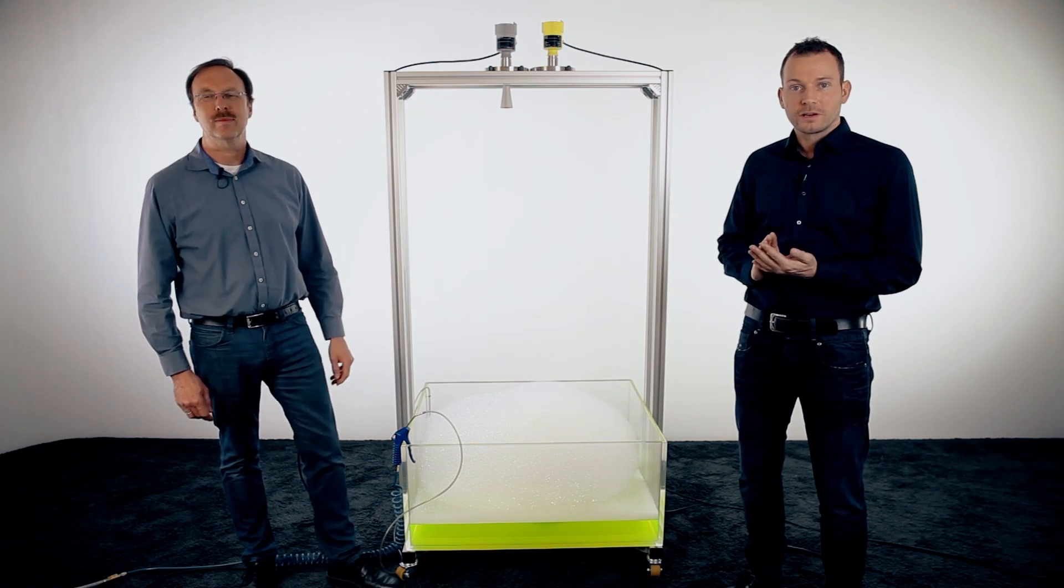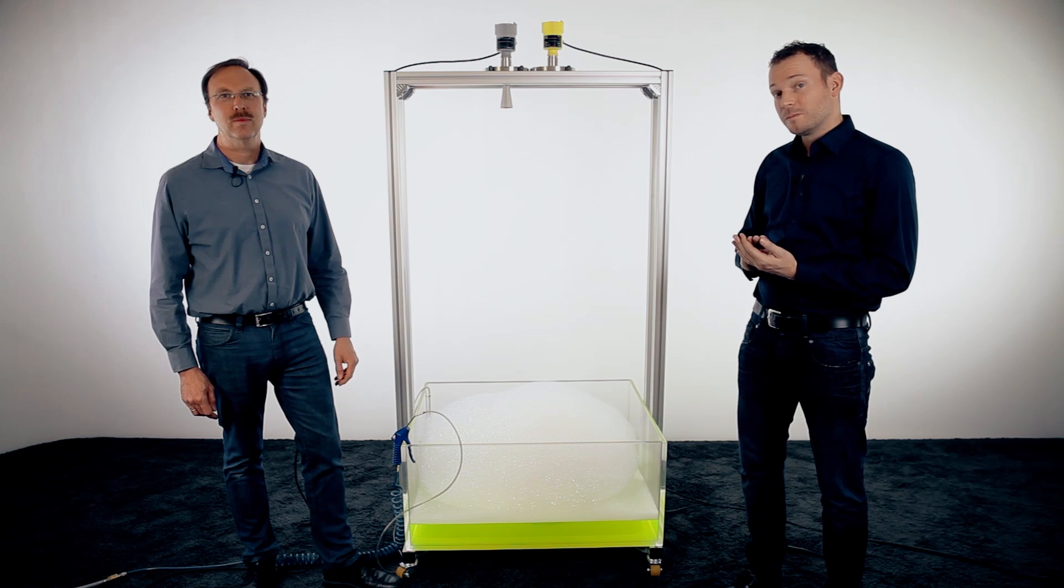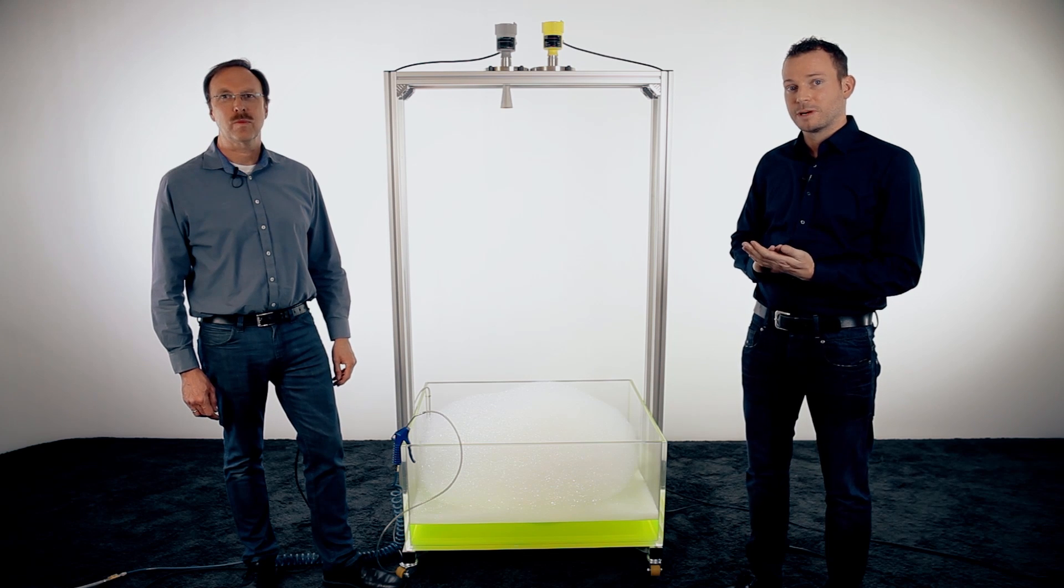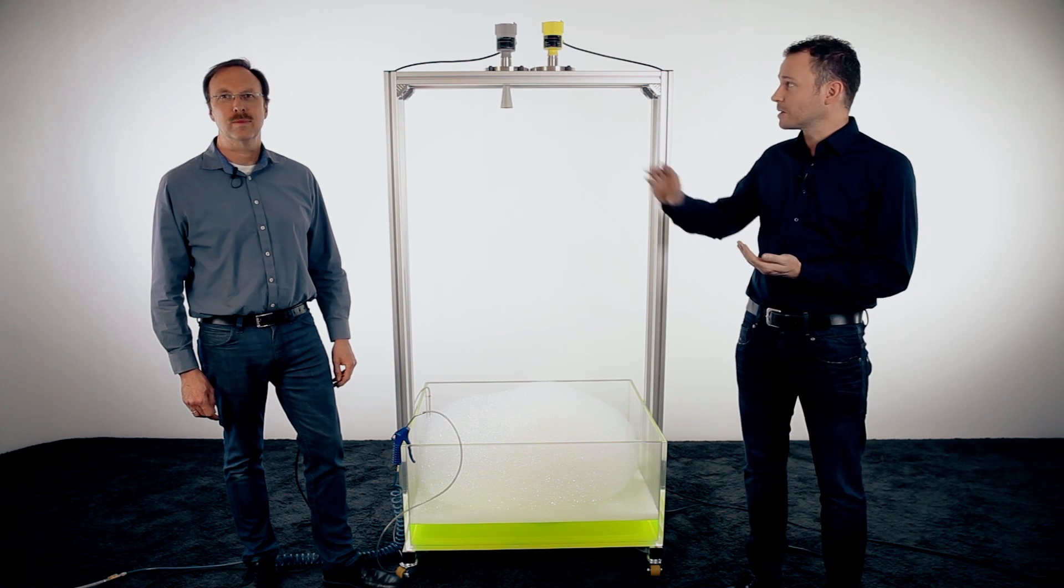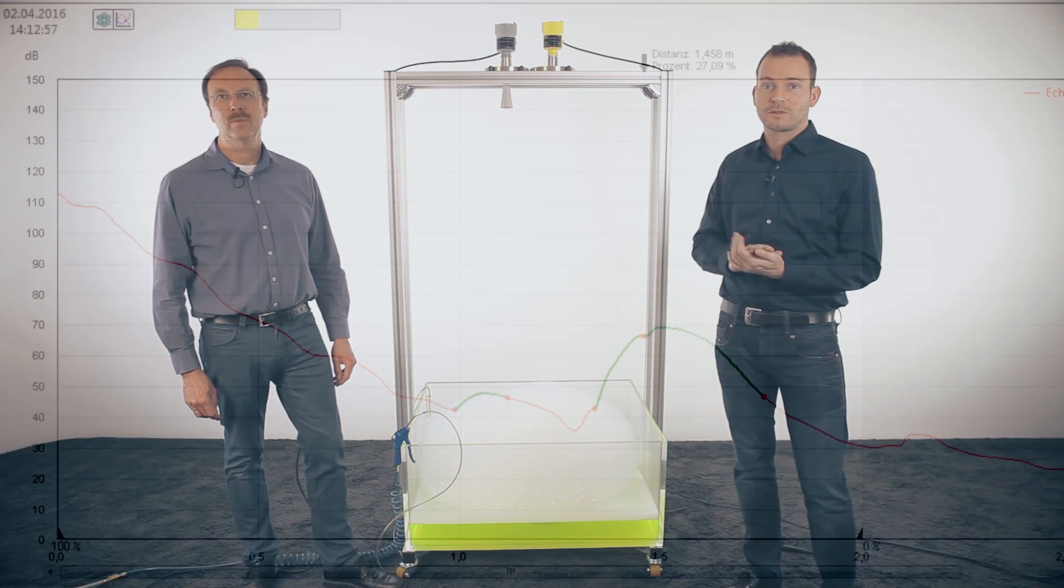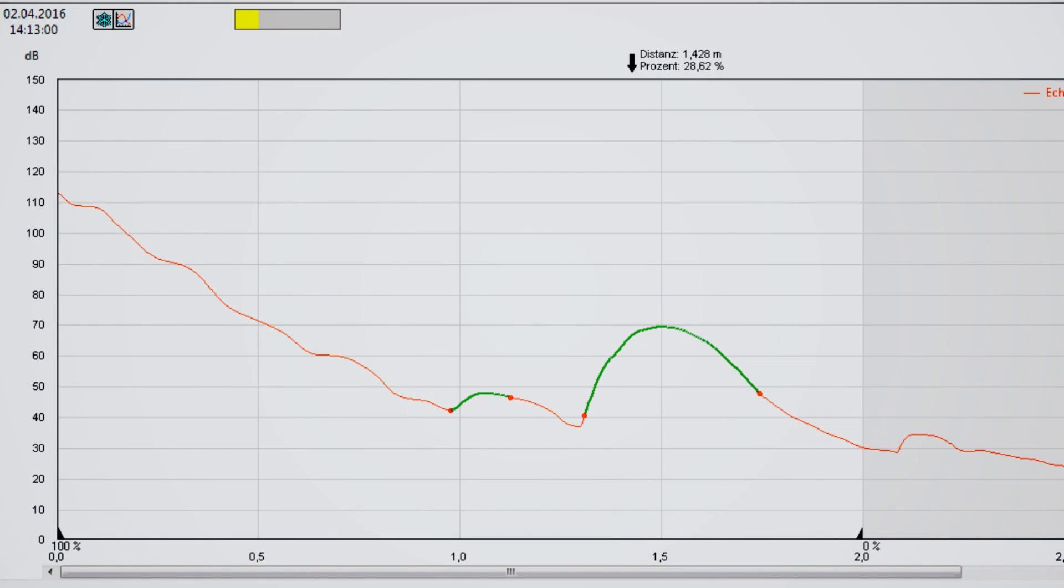So you see on both echo curves we get a damping by the foam, so the microwave is getting damped, but because of the higher dynamic range of the Vega Pulse 64 we have still a stronger signal even if you have so much foam on the water.